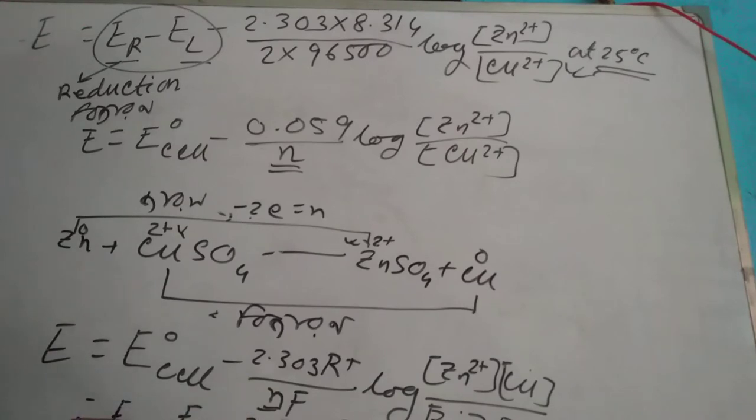The equation is E = ER - EL for the cell.